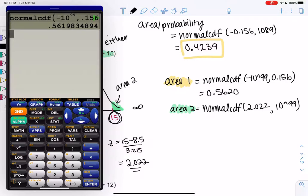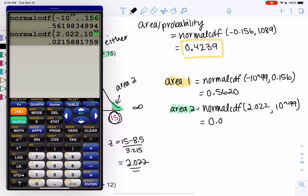In the second area, we'll do normal CDF again. 2.022 up to 10 to the 99. And we get 0.0216. And then we'll just add them together for total area.